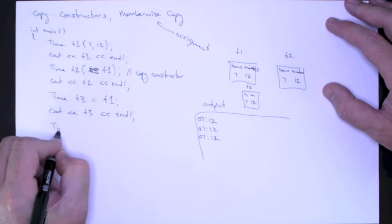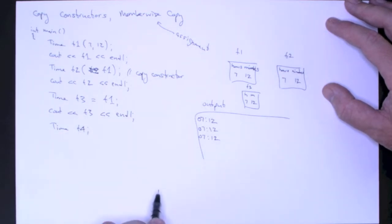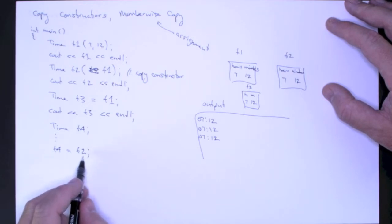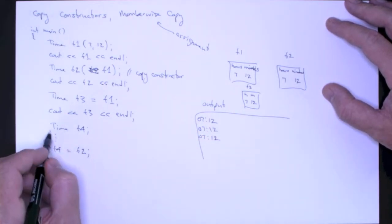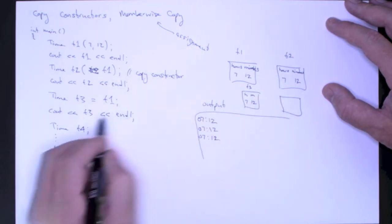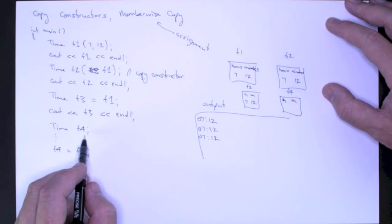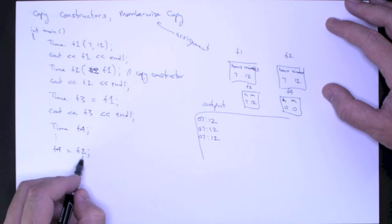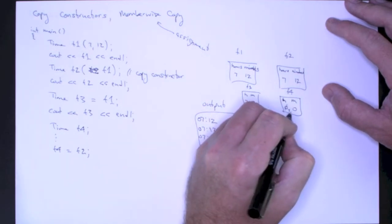One final example. I can construct a new time object T4 using the default constructor, and then later on, during program execution, I can just use assignment to copy T2 into T4. So, again, at this point, when we execute the default constructor, we're going to get a time object T4 in memory, with hours and minutes, and the default constructor is going to set hours to zero and minutes to zero. Then when we execute this assignment statement, this member-wise copy operator is going to copy the values from the private data members of T2 into the private data members of T4, at which point hours will become 7 and minutes will become 12.